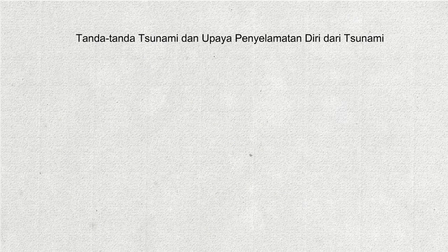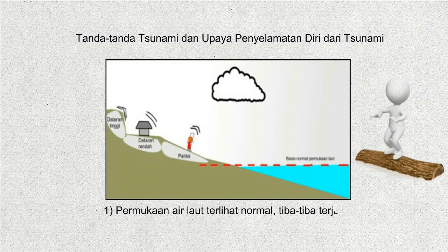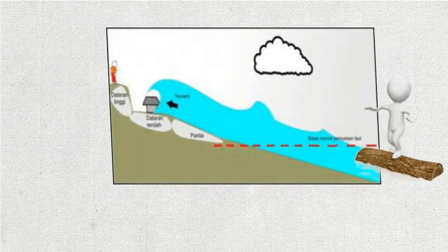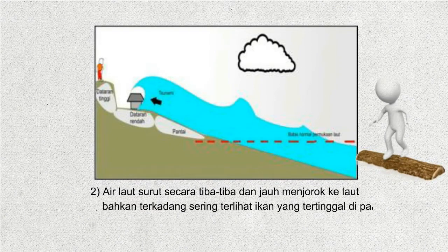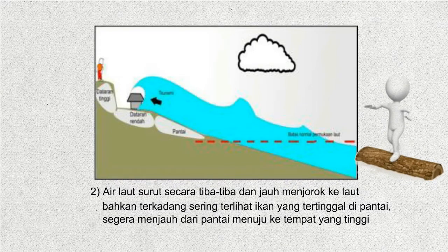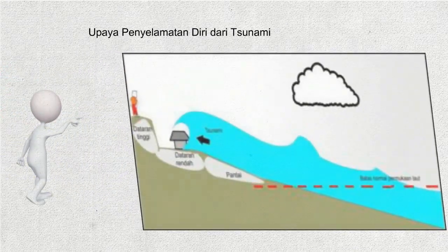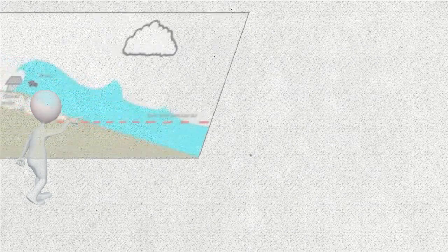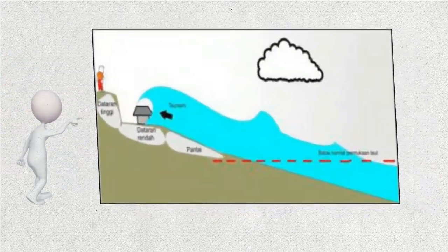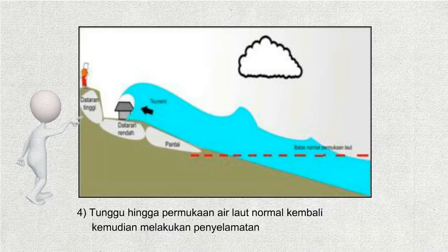Tanda-tanda tsunami dan upaya penyelamatan diri: 1. Permukaan air laut terlihat normal, tiba-tiba terjadi goncangan tanah. 2. Air laut surut secara tiba-tiba dan jauh menjorok ke laut; bahkan terkadang terlihat ikan yang tertinggal di pantai — segera menjauh dari pantai menuju ke tempat yang tinggi. 3. Berlindung di perbukitan atau tempat yang tinggi. 4. Tunggu hingga permukaan air laut normal kembali, kemudian melakukan penyelamatan.